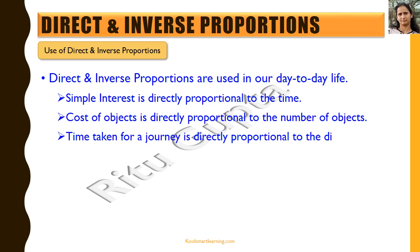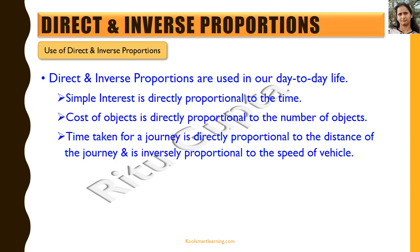Time taken for a journey is directly proportional to the distance of the journey. For example, if you travel 2 kilometers and take 15 minutes, then travelling 8 kilometers will take 1 hour. Time taken is also inversely proportional to the speed of the vehicle — if you increase your speed from 2 kilometers per hour to 10 kilometers per hour, the time taken for your journey will reduce to one-fifth.